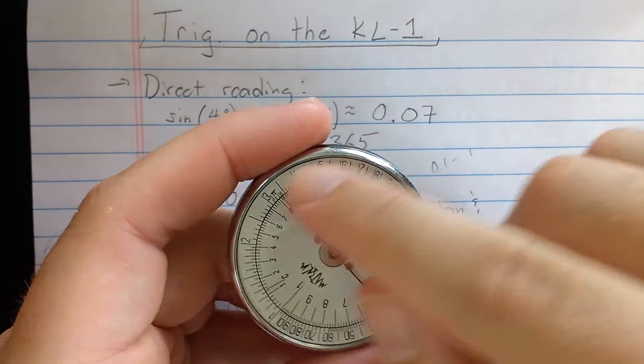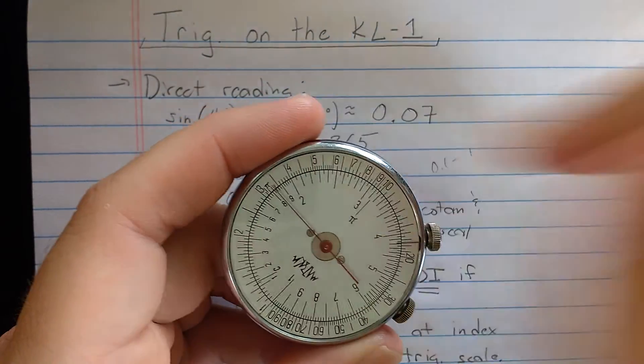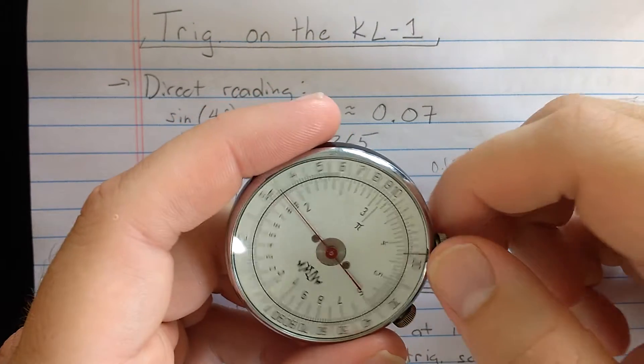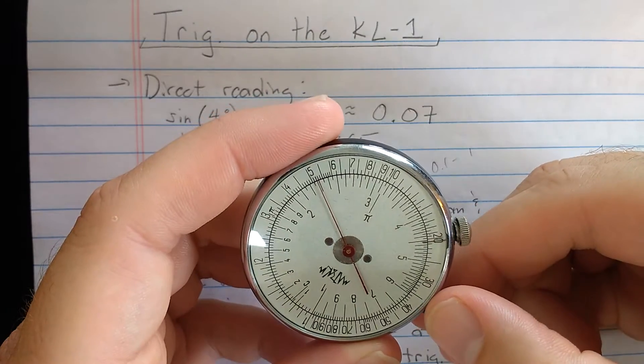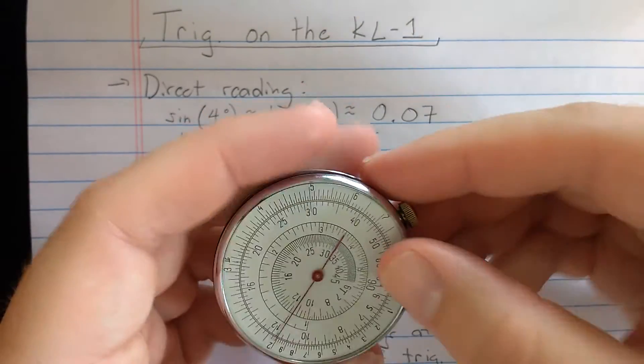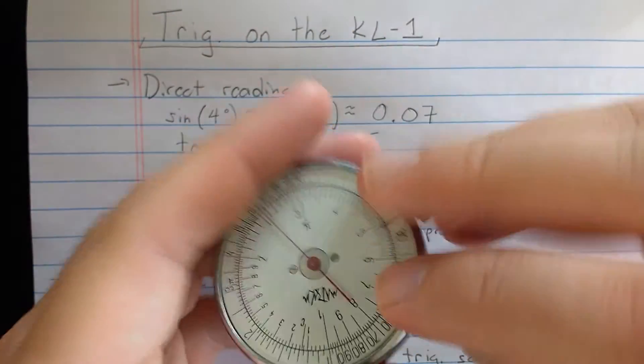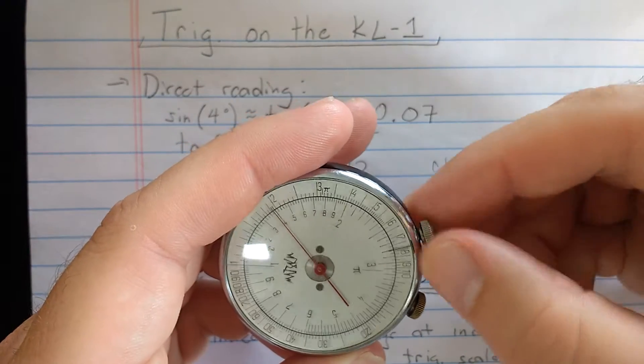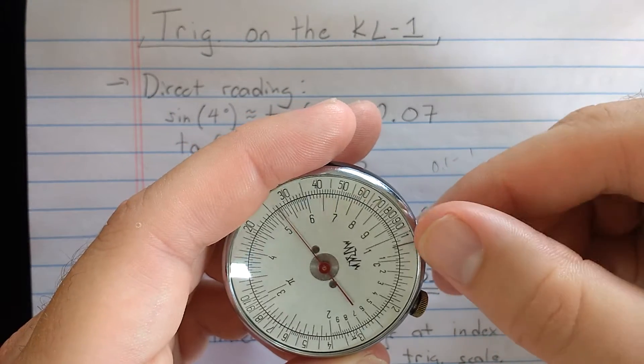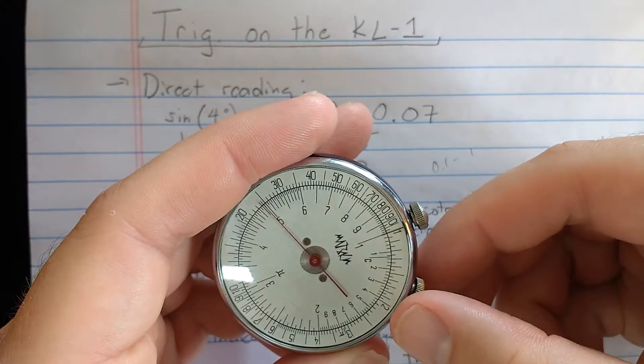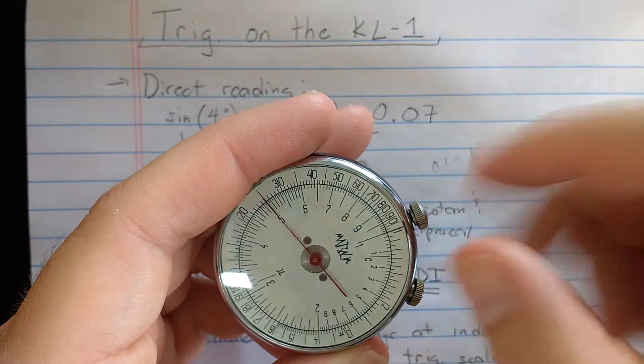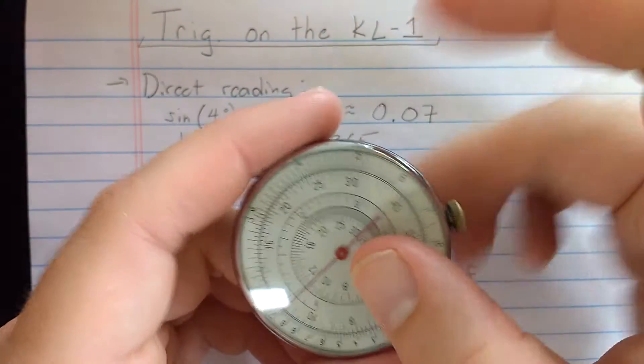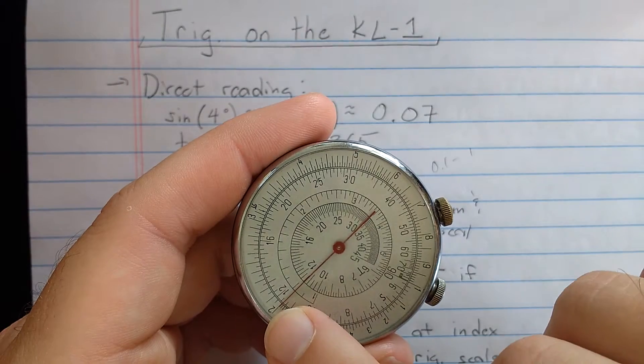First of all, notice that the outermost scale here on the back is a reciprocal scale. So if I set that with the needle, to use reciprocals, you need to first close the slide rule, so bring the fixed indicator to the index. Then if you find, say, 5 here on the front side, it will read the reciprocal 2 on the outermost scale on the back side.